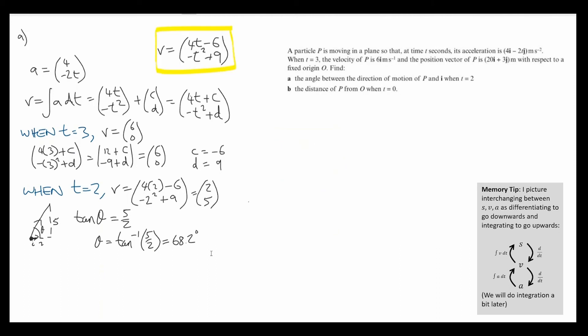Part B asks us to find the distance of p from O when t equals 0. If you want to know the distance of p from O when t equals 0, so that's at the beginning of the journey, we just want to know the original position vector. We want to know r when t equals 0. Let's find r. We can find that by integrating the velocity function. When we integrate, we're once again going to get a constant of integration. This time I'll call the components e and f.